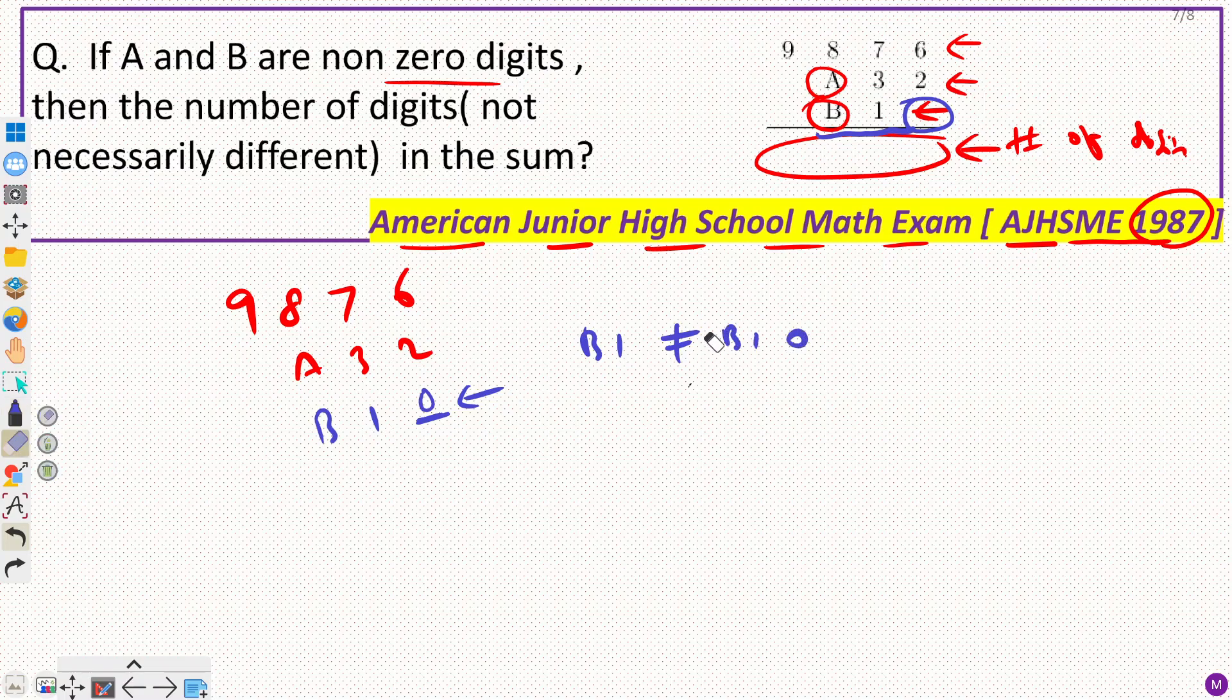So it means that even if it is written like that, you can't add this way. You have to put B1 here. So you have to put B1 here, not here. This is wrong, okay? Because this place will be empty for you.